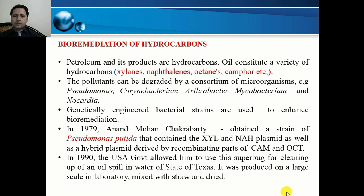The process can be enhanced by adding genetically engineered bacterial strains. In 1979, scientist Anand Mohan Chakrabarty obtained a strain of Pseudomonas putida containing xylene and naphthalene plasmids as well as a hybrid plasmid derived by combining parts of camphor and octane plasmids. In the 1990s, the US government allowed him to use this 'superbug' to clean up an oil spill in Texas; it was produced at large scale, mixed with straw, dried, and used for further processes.